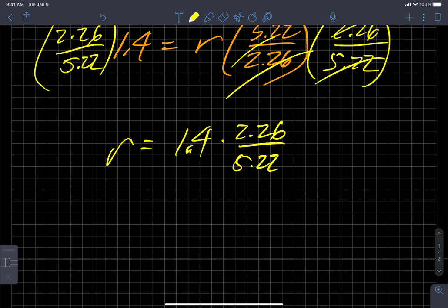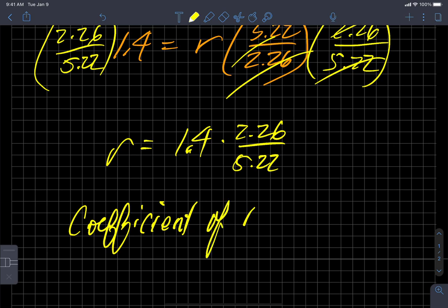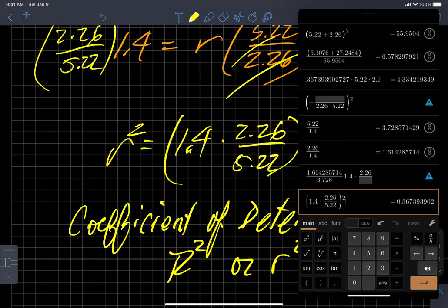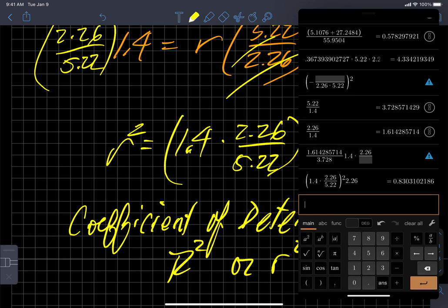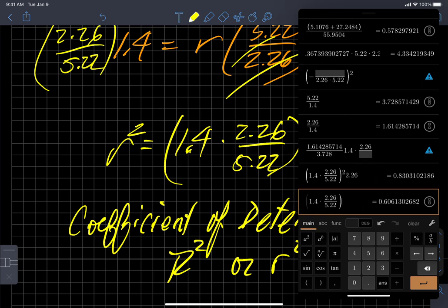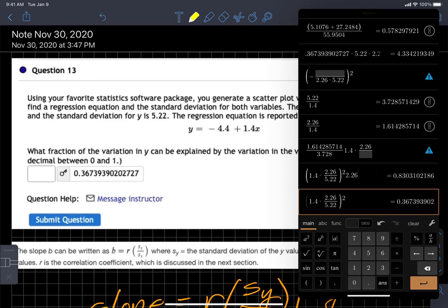Which is great, except what we're looking for is not the r value. We're looking for the coefficient of determination, which is our r squared value. So if I square both of these, we'll be in much better shape. So let's do the math. We're going to take 1.4 times 2.26 divided by 5.22, put that in parentheses, and then square it. And we get 0.367393902, and that's what they get here as well.